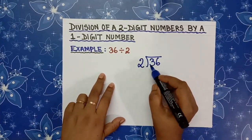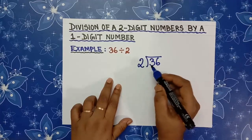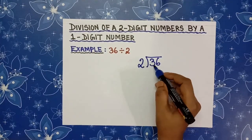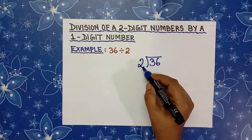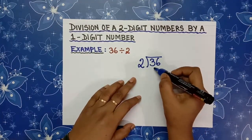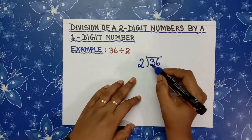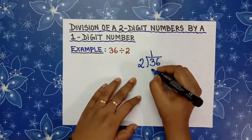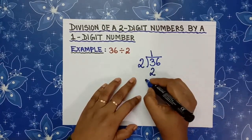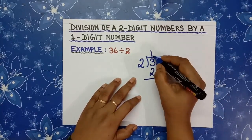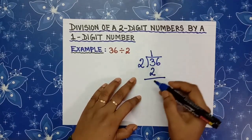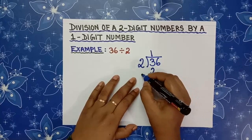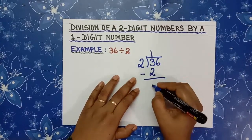Now see which tables we have to recite. We have to recite the table of 2. Find out how many times 2 goes in 3. 2 ones are 2 and 2 twos are 4. So 2 goes in 3 one time. 2 ones are 2. You will write 1 above 3 in the quotient place and write 2 below 3. Then you subtract 3 minus 2. 3 minus 2 is 1.